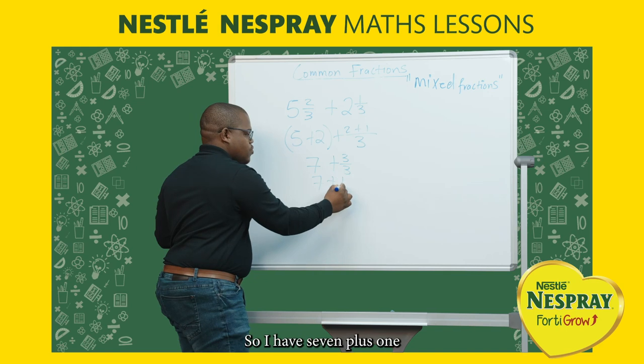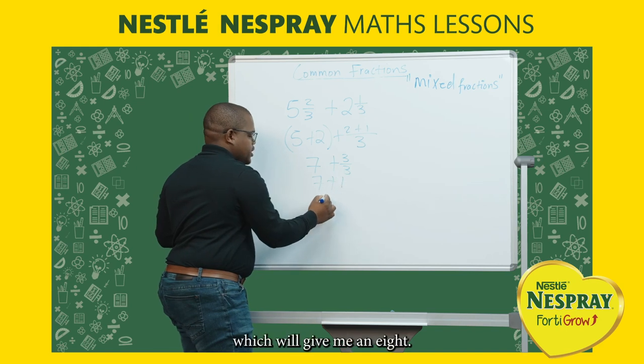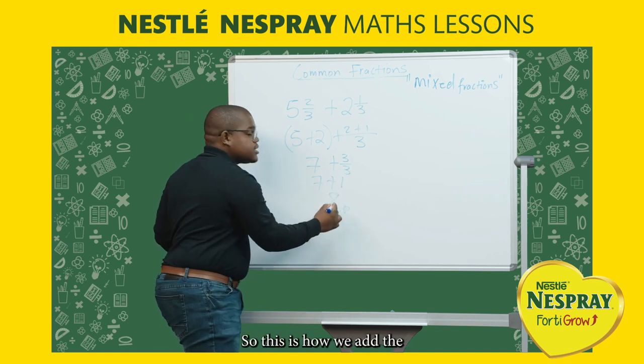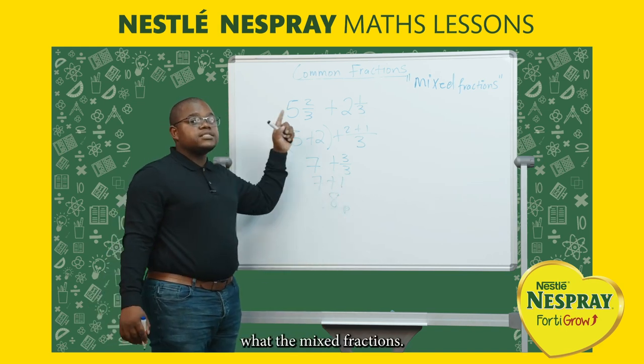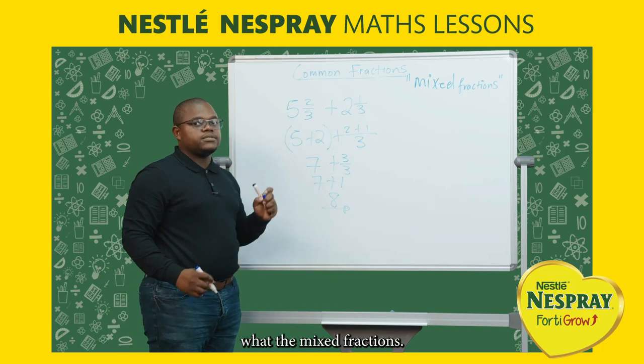So I have seven plus one, which gives me eight. This is how we add mixed fractions.